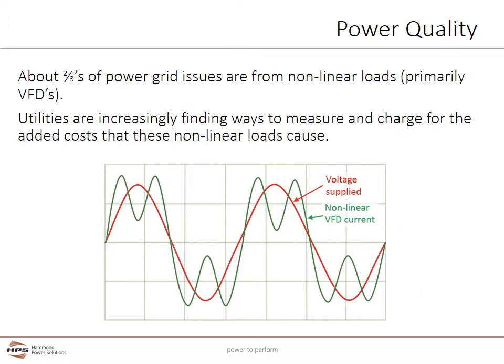Anything that rectifies AC to DC power is a non-linear load and produces current harmonics. The line side of a VFD is basically a DC power supply and is a classic three-phase non-linear load. Other large non-linear loads can include inductive heaters, arc furnaces, welders, and large DC power supplies and chargers. Overall, non-linear loads now make up the majority of all utility loads.